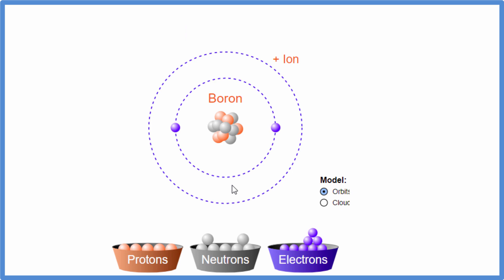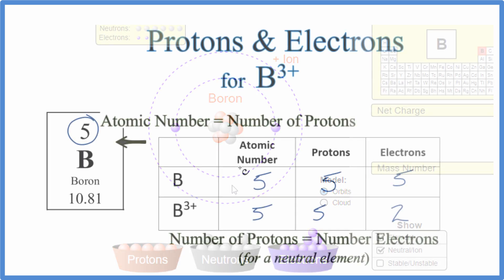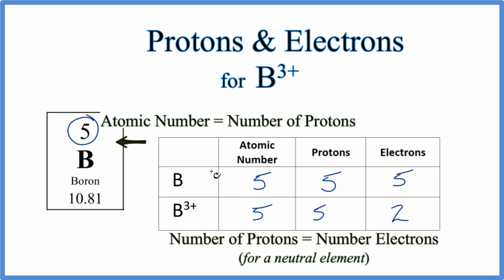Back to our table, we found the number of protons for both boron and the boron ion is five, same as the atomic number. But the electrons, that's different. Neutral boron has five, then the ion would have two.